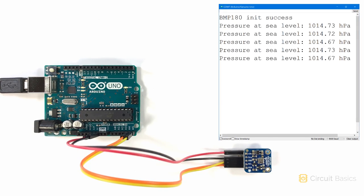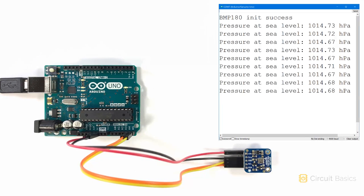So now, take this measurement and use it for P0 in the altitude sketch we saw earlier. And that will give you your altitude relative to sea level.